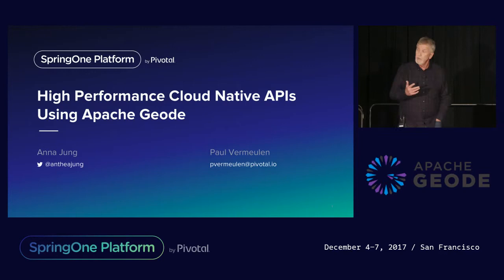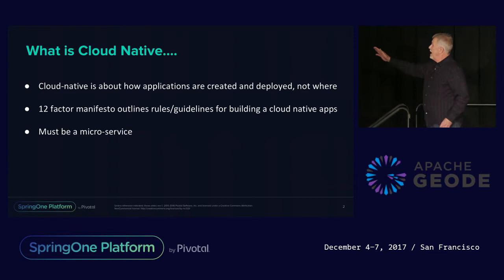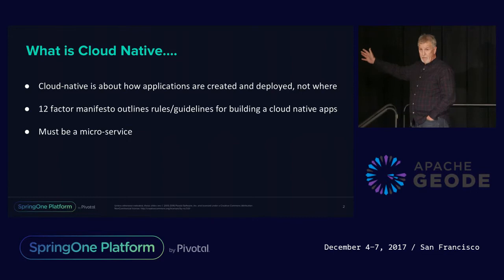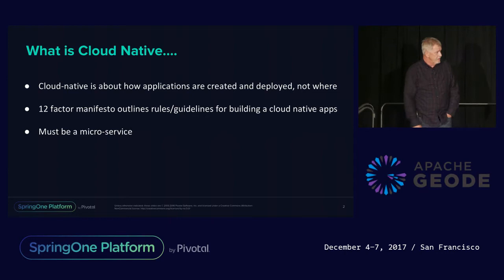So what is a cloud-native application? It is about how applications are created and deployed, not where. It has to fit in the 12-factor manifesto — the rules for building cloud-native type applications. And the last thing: it must be a microservice.